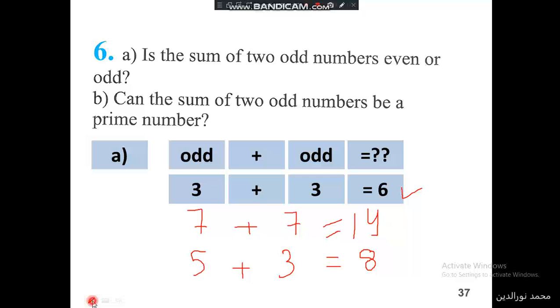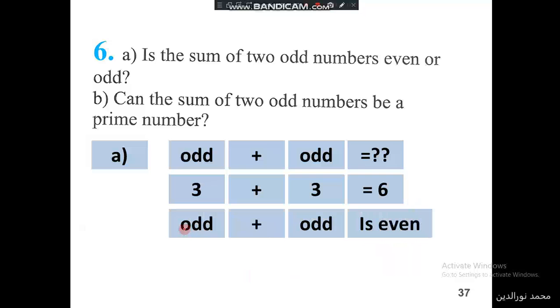So the sum of two odd numbers is even. Odd plus odd will give us an even number. Part B: Can the sum of two odd numbers be prime? So pay attention to this question: Can the sum of two odd numbers be prime?